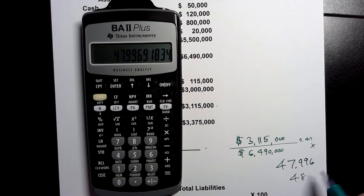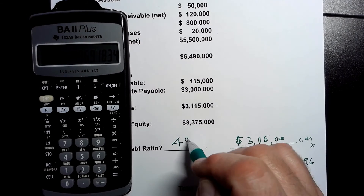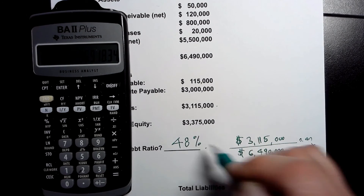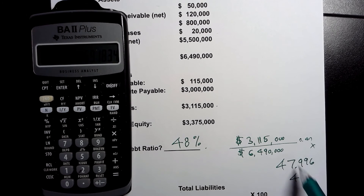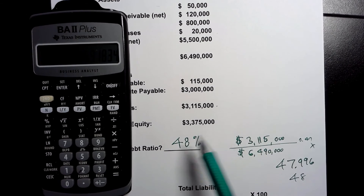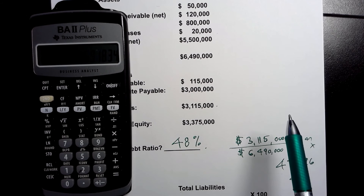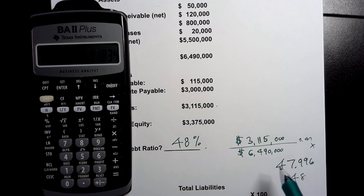So I've got forty-seven point nine nine nine six — basically forty-eight percent. Our debt ratio here is forty-eight percent. Check with the problem how detailed it wants to be and to what decimal place. In this case I rounded to a whole percentage, and so therefore we've calculated our debt ratio.